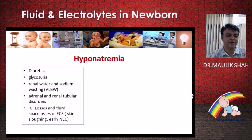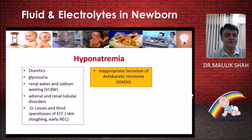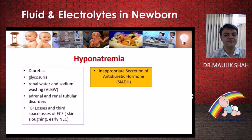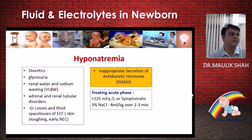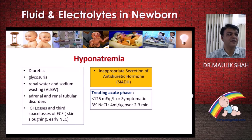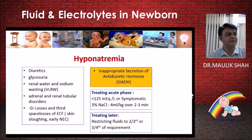Hyponatremia can occur due to diuretics, glycosuria, renal water handling problems in VLBW babies, adrenal and renal tubular disorders, GI losses, third-space losses, and other causes. The most common problem encountered in the NICU is SIADH — syndrome of inappropriate ADH secretion — which develops in stressed babies. In the acute phase, if sodium is below 125 mEq/L, treat with 3% normal saline at 4 ml/kg. Once stabilized above 125 mEq/L, restrict fluid to two-thirds or three-fourths in SIADH.